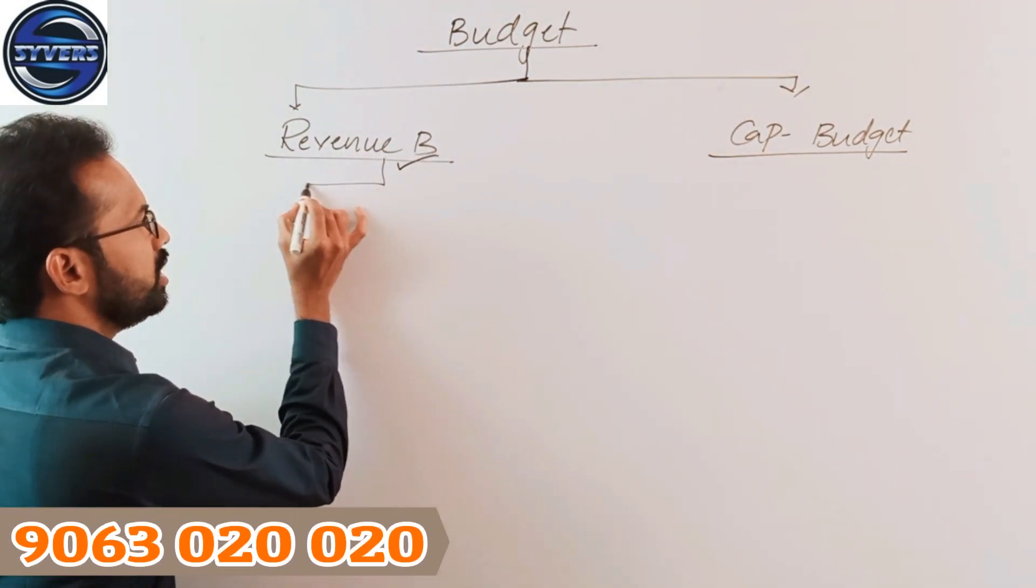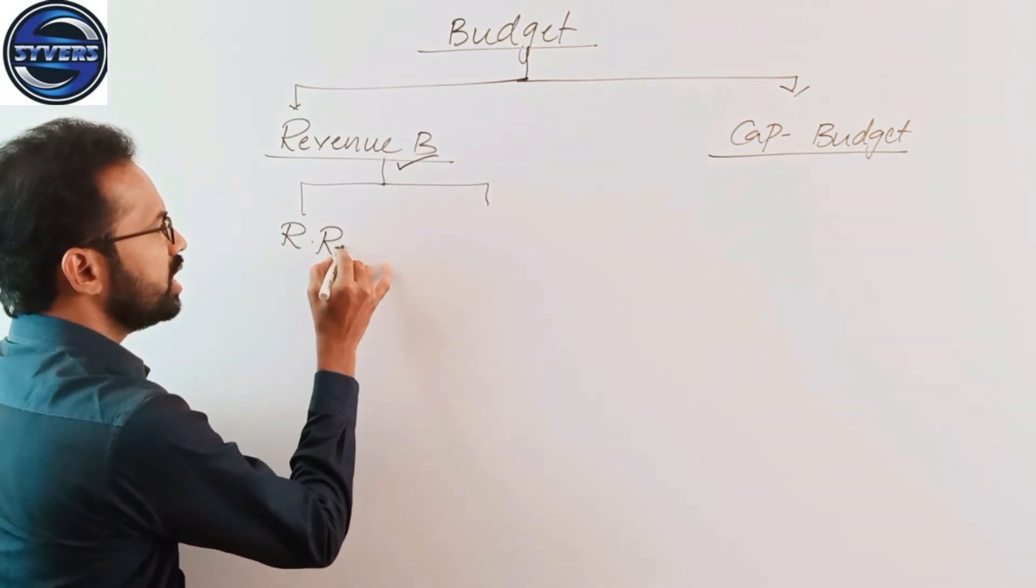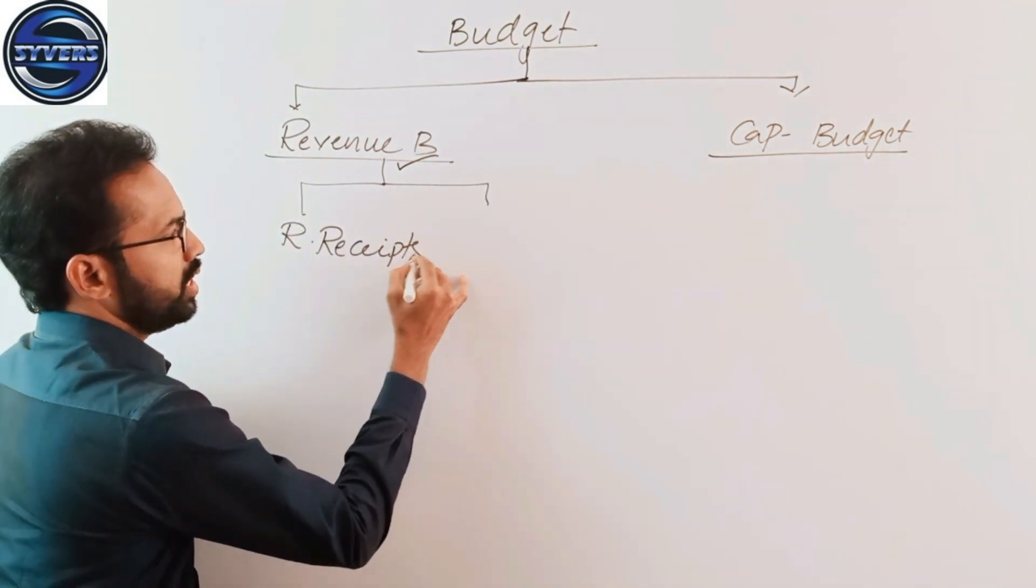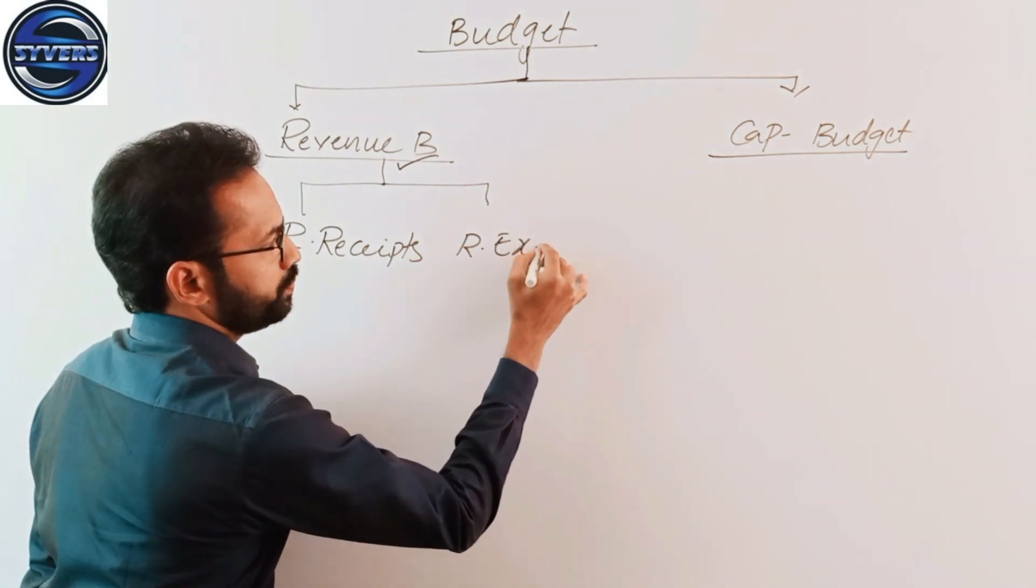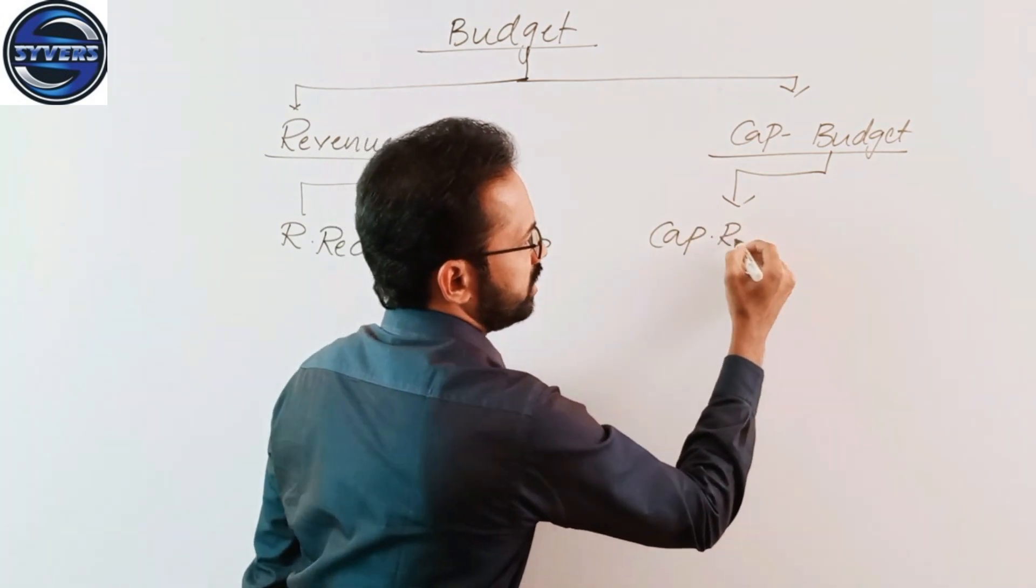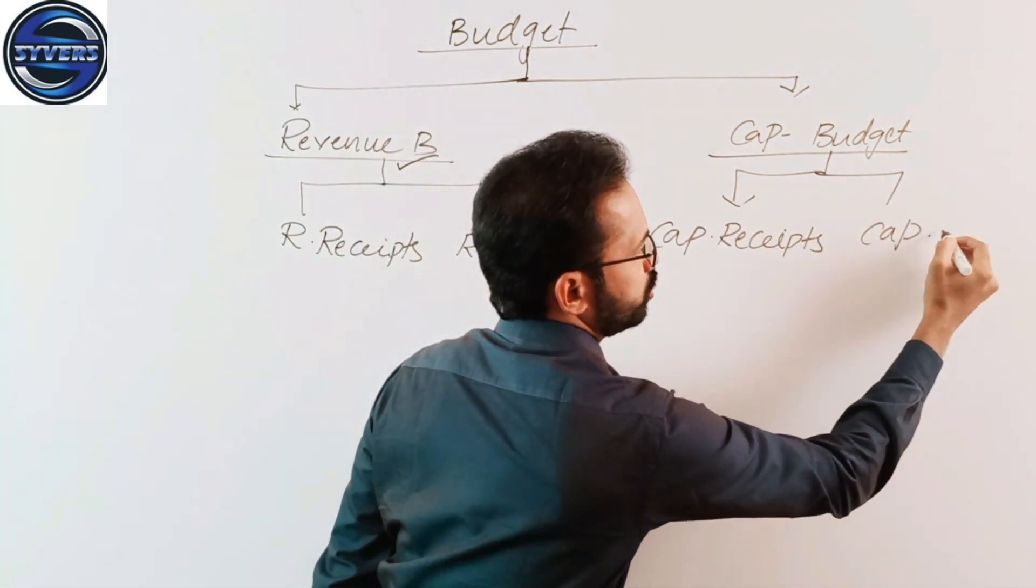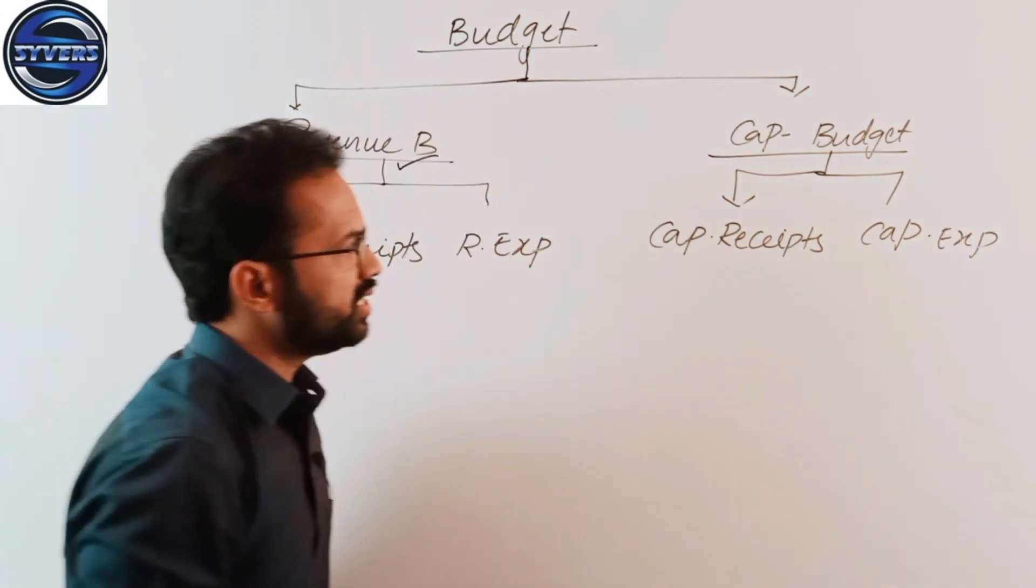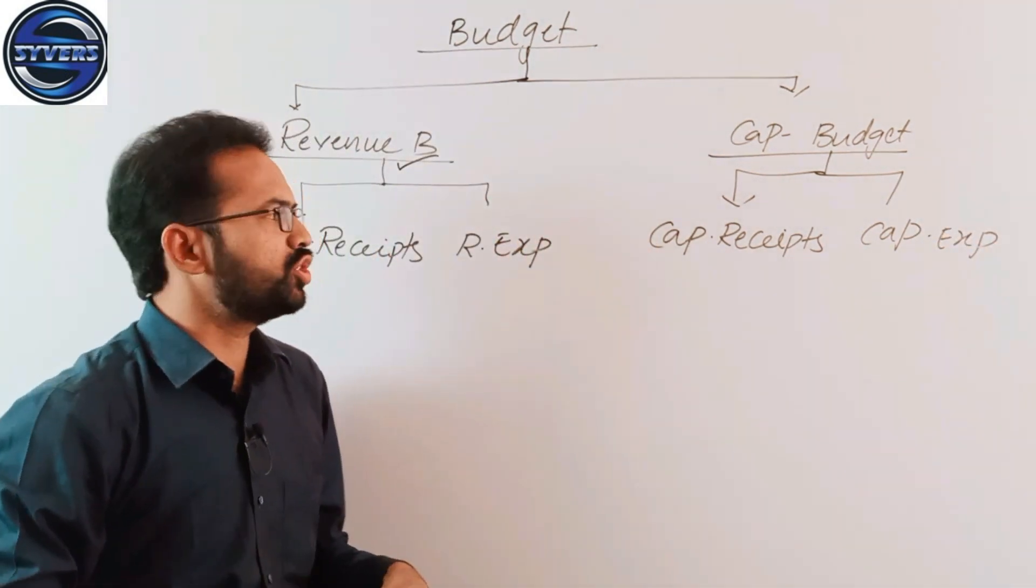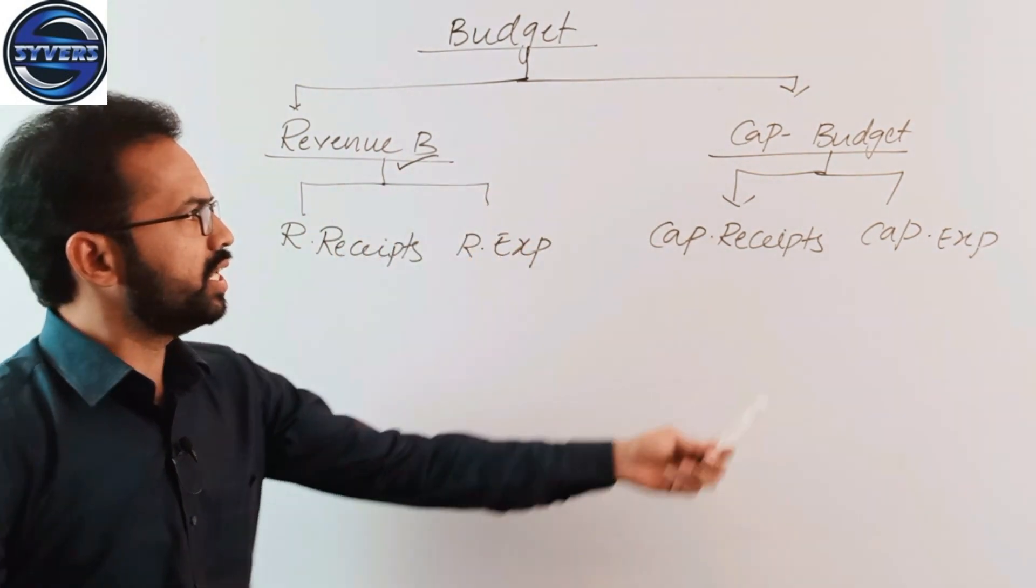Budget includes estimations of income and expenditure. Revenue budget includes revenue income or receipts and revenue expenditure. In the same way, capital budget includes capital receipts and capital expenditure.